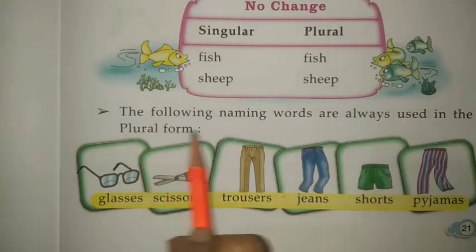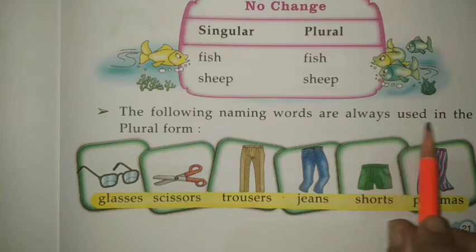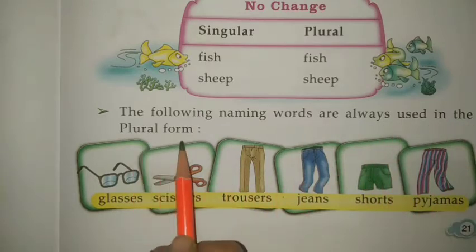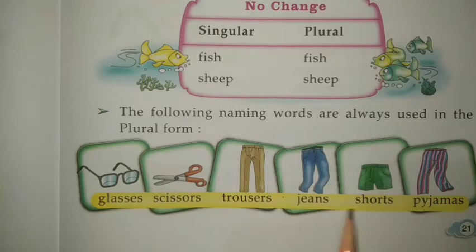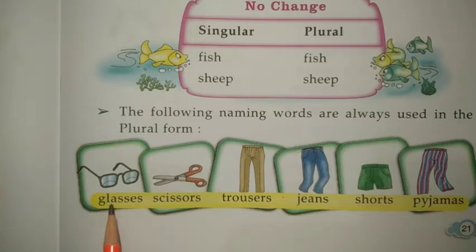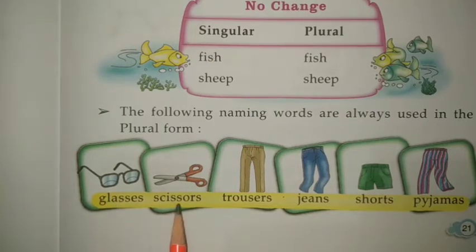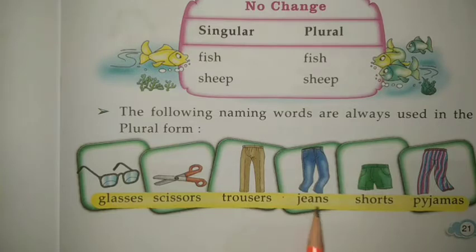The following naming words are always used in plural form — उनका singular form नहीं है: glasses, scissors, trousers, jeans, shorts, pyjamas. These are always used in plural form.